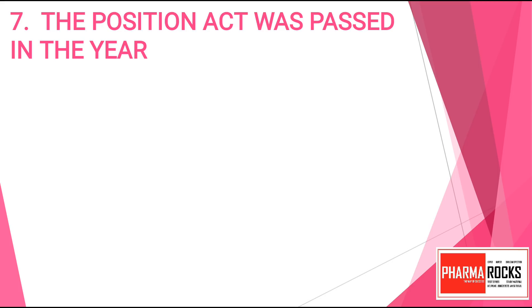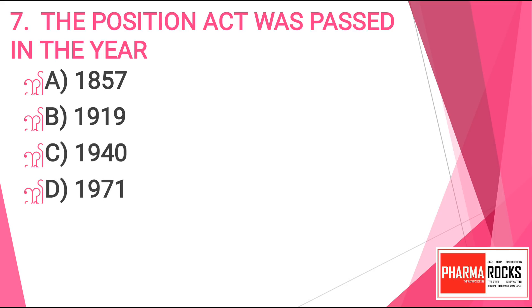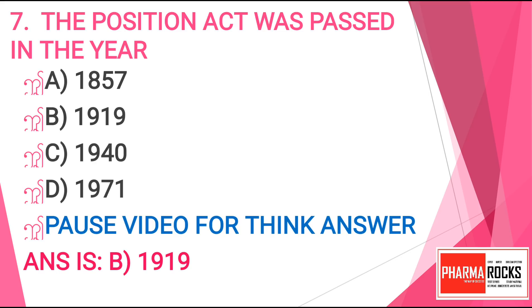Question number 7. The Poisons Act was passed in the year: Option A. 1857. Option B. 1919. Option C. 1940. Or Option D. 1971. You may pause the video and note down your answer. The correct answer for this question is Option B. 1919.